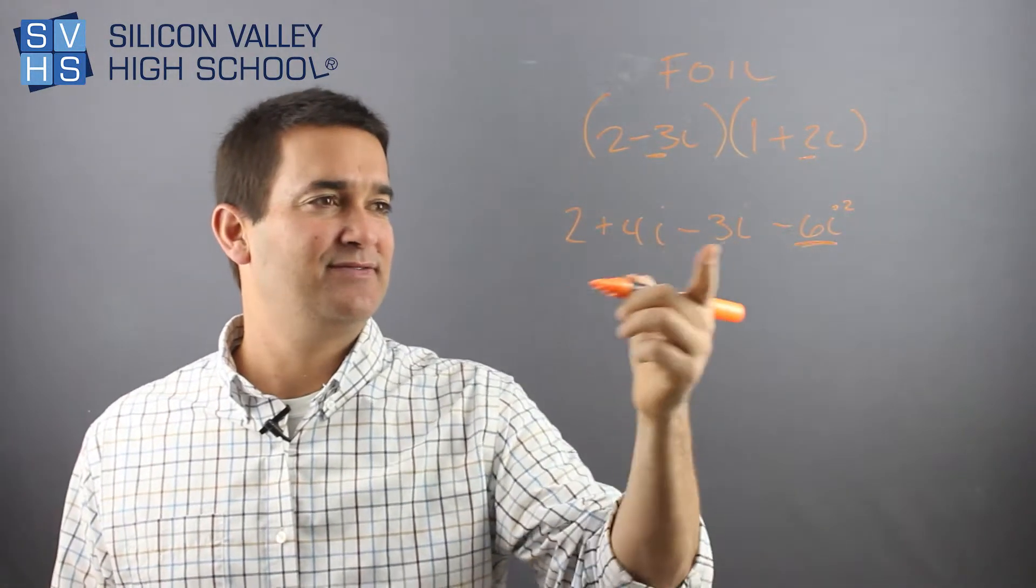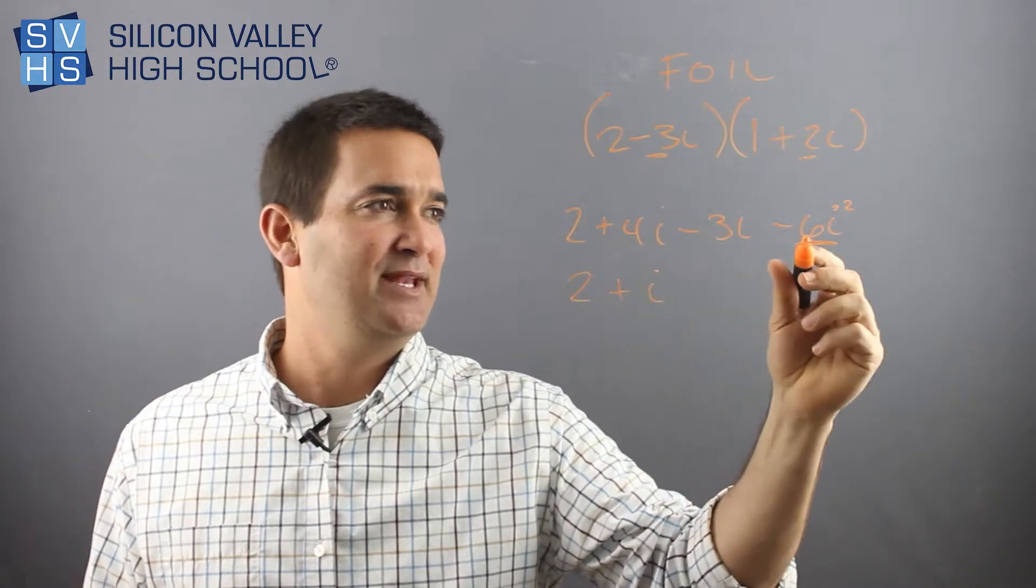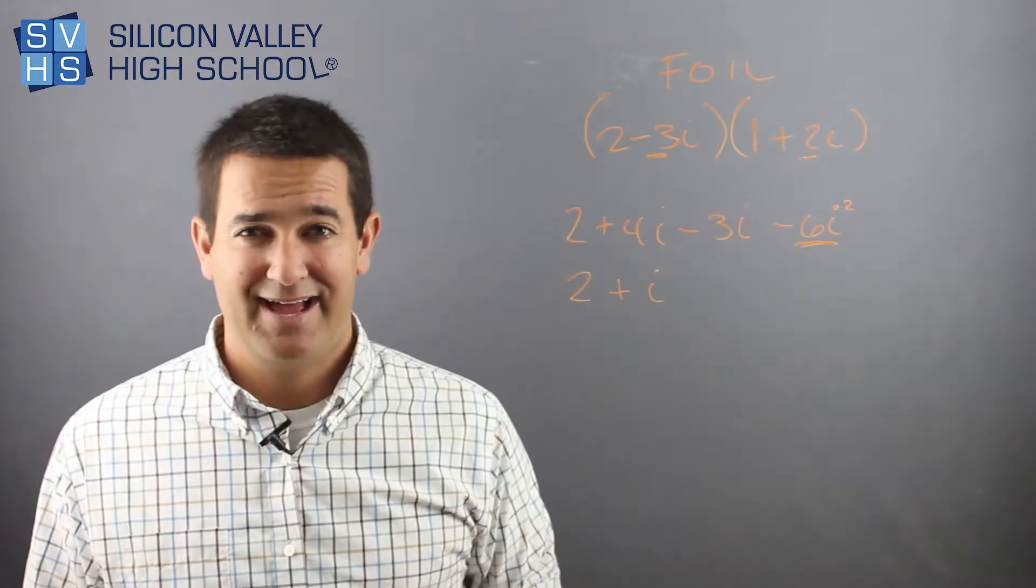This gets super weird right here. This stuff's all straightforward. You're like, okay, this is easy. Obviously, 4i minus 3i is just 1i, but then you have this mysterious guy at the end.